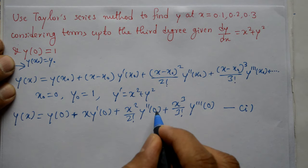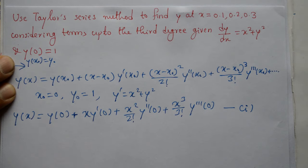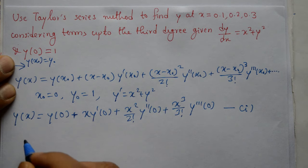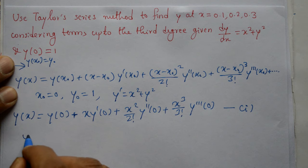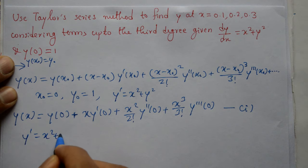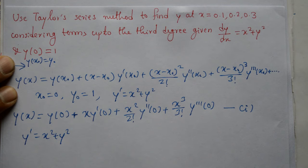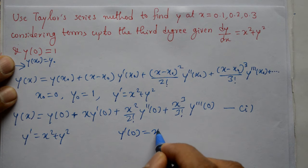y(0) is equal to 1. Using this equation, y dash is given here — y dash is equal to x square plus y square.